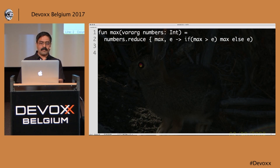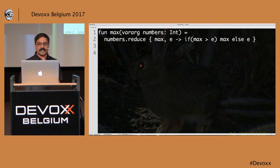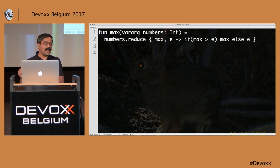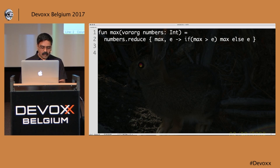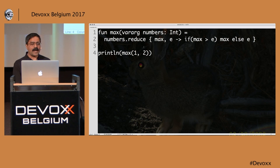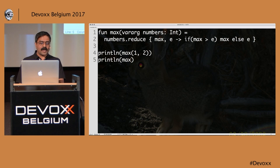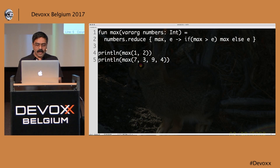I'm using the reduce function here to get the data. This is a lambda expression — I put a curly around it. Lambdas can appear as a curly outside or within parentheses, but a curly is always required in Kotlin. I can call max(1, 2) to get 2, or max(8, 7, 3, 9, 4) and get back 9.